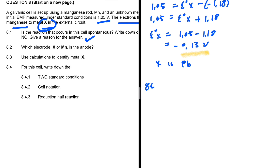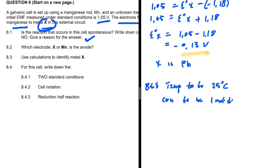Question 8.4.1 asks for the two standard conditions for this cell. The first condition is that the temperature must be 25 degrees Celsius, or 298 Kelvins. The second condition is that the concentration must be 1 mole per decimetre cubed.